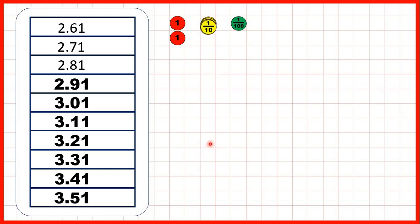When we've got ten tenths, we can exchange those ten tenths for one more whole. So that gives us three ones and one hundredth, or 3.01. And then we can keep on counting in tenths, up to 3.51.